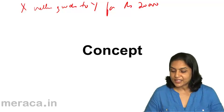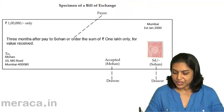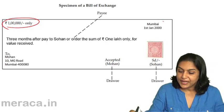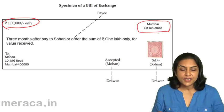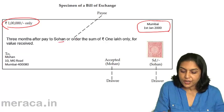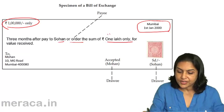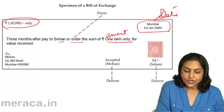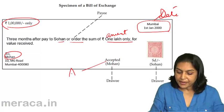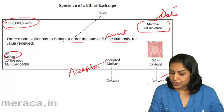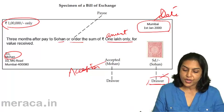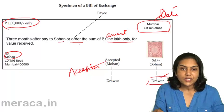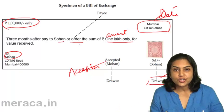With this background, let us first look at a specimen — a format — of a bill of exchange. This is a specimen of a bill of exchange. There is an amount mentioned, the bill is dated, and the bill says: three months after, pay to Sohan or order the sum of Rs. 1,00,000 only, for value received. It is addressed to Mohan and accepted by Mohan. It was prepared by Sohan, so Sohan is the drawer and maker of this bill. Sohan is instructing Mohan to pay him or order — meaning any person that Sohan would endorse or direct payment to.